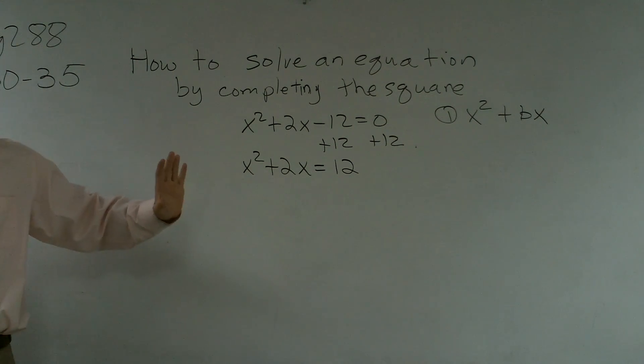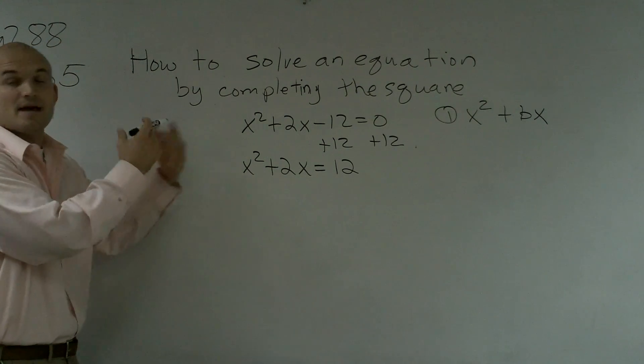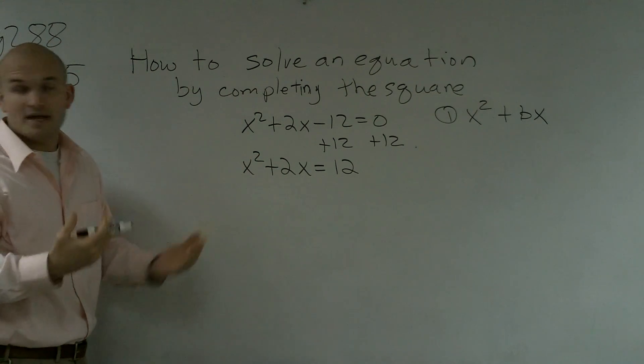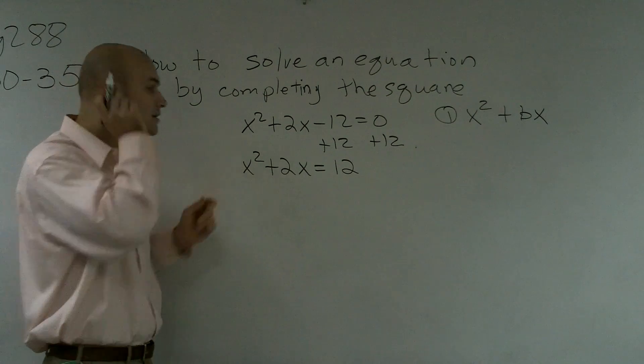All right, so that's the first step, no matter what. Sometimes if there is an a, like a is 2, that means you're going to have to divide by 2. If a is 9, you're going to have to divide by 9 to get rid of whatever a is.